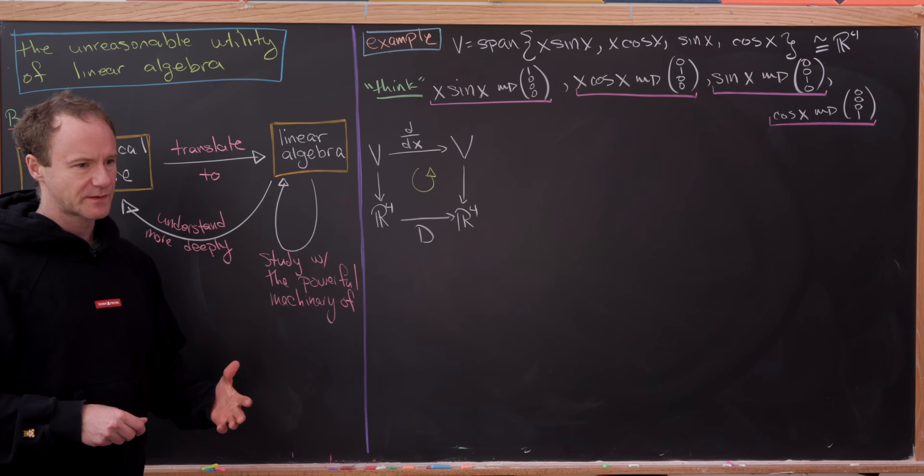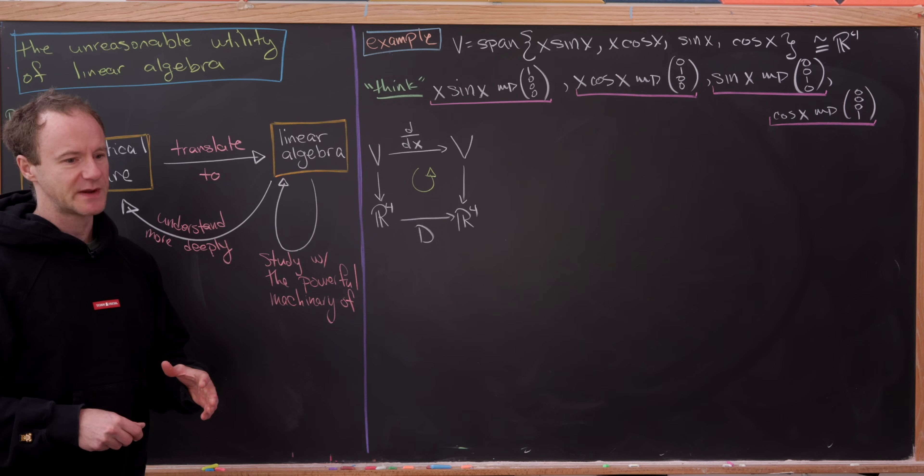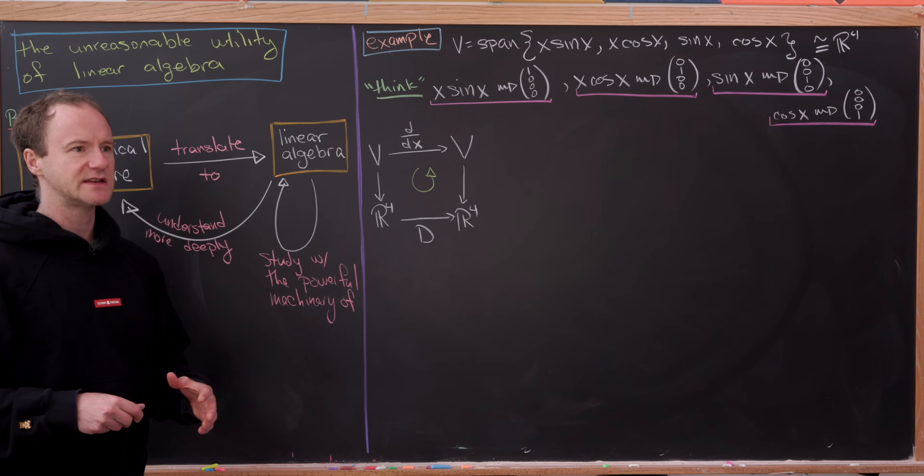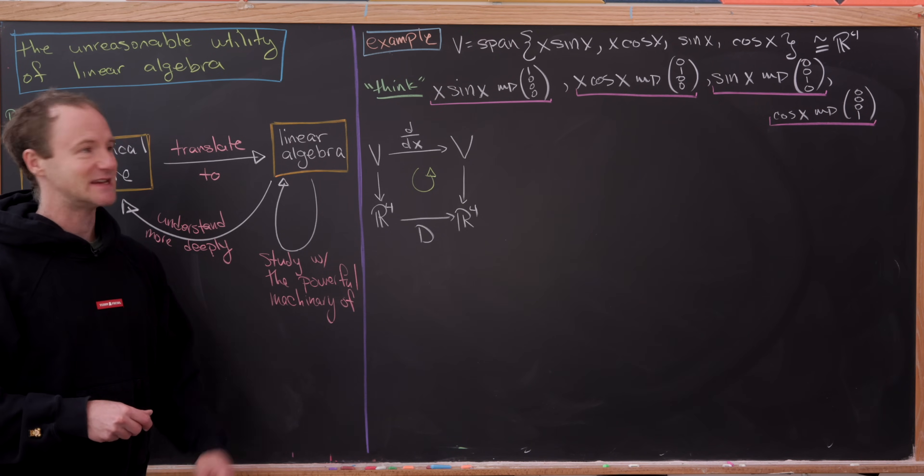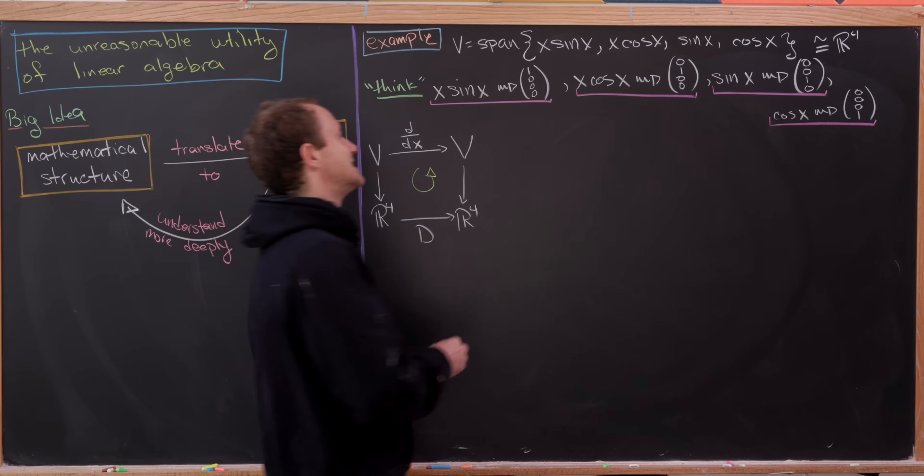And we want to choose this capital D so that this is a so-called commutative diagram, which means we can start over here in capital V and take any path we want to R4 down here, and we'll get the same result. That means that in this setup, capital D will be a representation of our derivative. But let's recall to get a matrix representation of any linear transformation, you really only need to know what it's doing to the basis vectors. So let's see that.